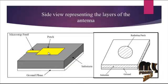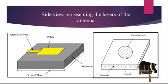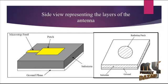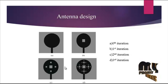Here we are using the parametric model, which is the sandwich model. The substrate is the middle layer, the ground plane is the bottom layer, and the patch is the top layer. This is the sandwich model of the antenna. Here we are using the circular patch of the antenna, with the substrate, ground plane, and radiating patch all calculated. The antenna design uses the zeroth iteration, first iteration, second iteration, and third iteration with different iterations calculated.